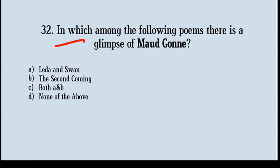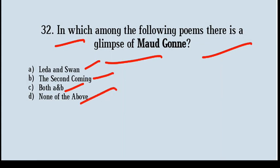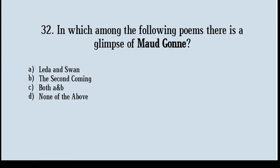In which of the following poems is there a glimpse of Maud Gonne? Options: Leda and the Swan, The Second Coming, both A and B, none of the above. Correct answer: option number A, Leda and the Swan.